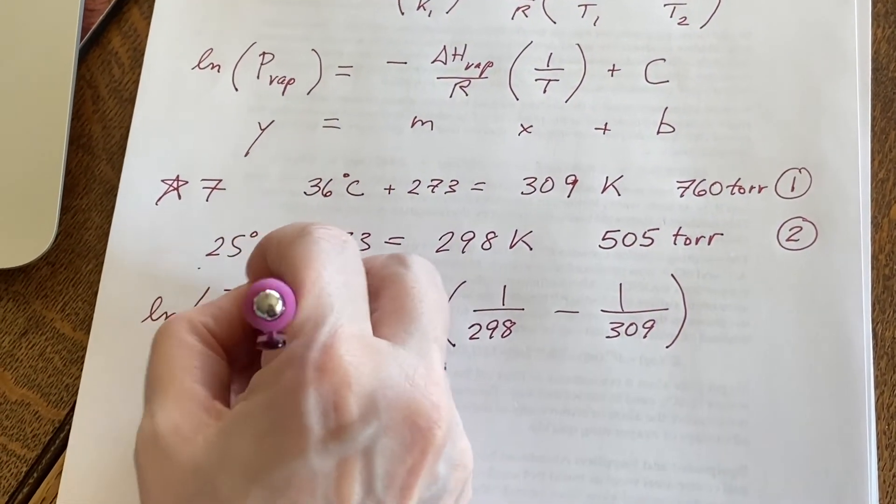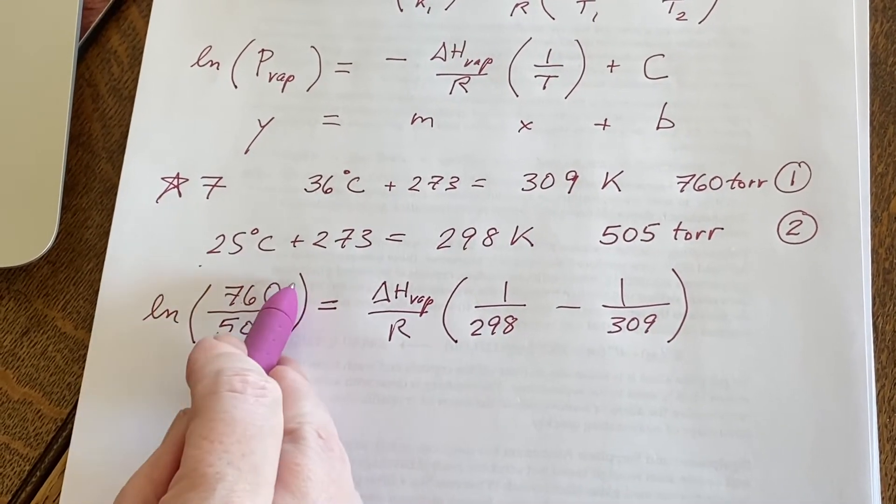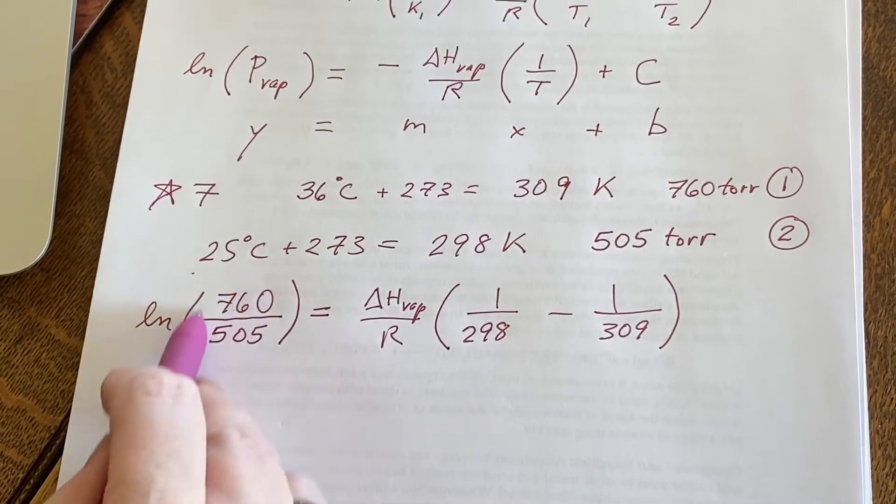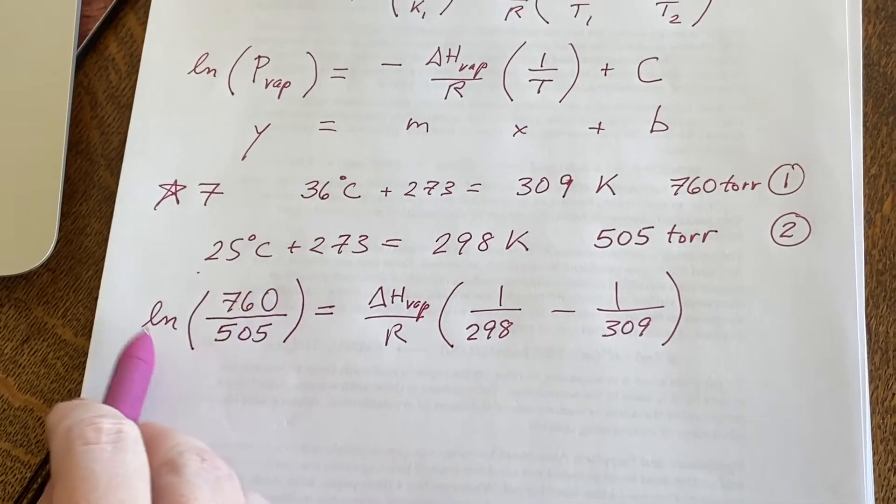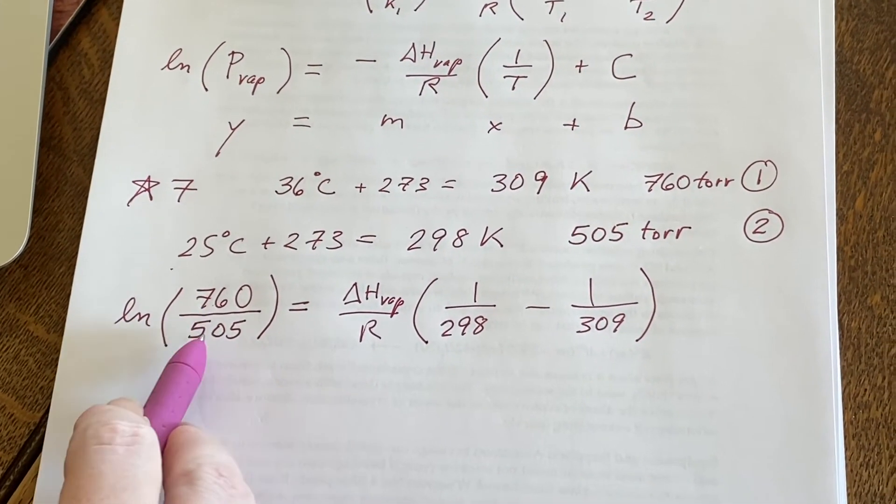Now you'll notice I didn't even bother to write the Torr because both the Torr divided by Torr, the Torrs are going to cancel each other out. So this will be unitless, which is good because I can't take a logarithm of something that has units. It needs to be a plain number.